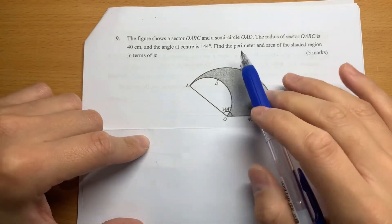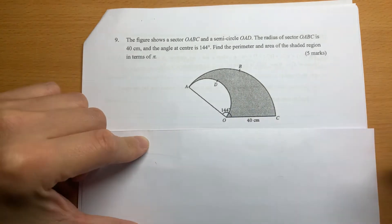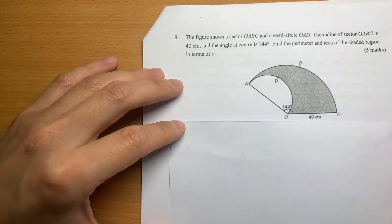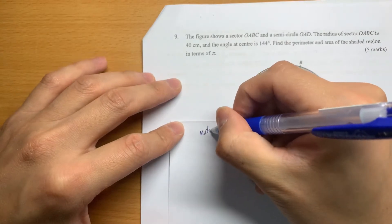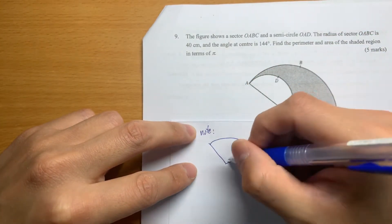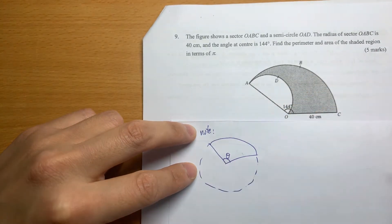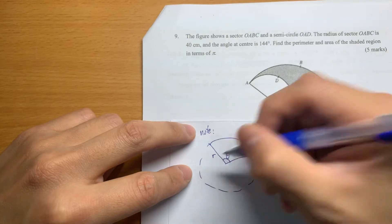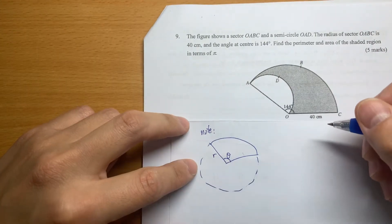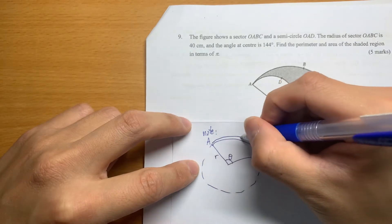Question 9 is about a sector. Before we start the question, I'll start with some notes. For a sector, this is the center of the circle, and this is part of the circle. This is the radius.